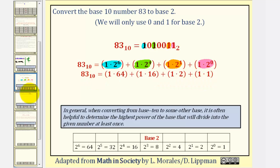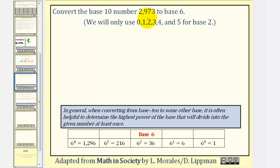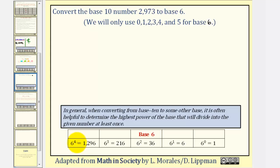Let's take a look at one more example. We want to convert the base 10 number 2,973 to base 6. We first find the place values by starting with 6 to the 0 and increasing the exponent by 1: 6 to the 1st, 6 to the 2nd, 6 to the 3rd, 6 to the 4th, and so on. Note that for base 6 we only use digits 0 through 5. The highest power of 6 that divides at least once into 2,973 is 6 to the 4th, because 6 to the 5th would be too large. So our number in base 6 will have 5 digits.